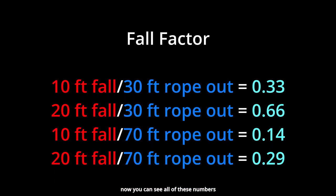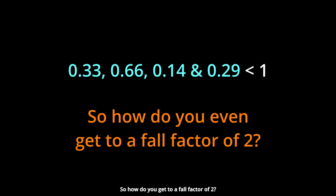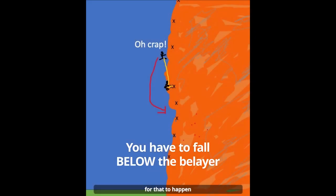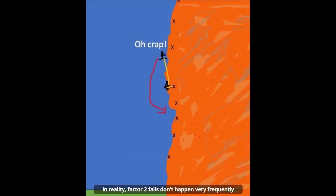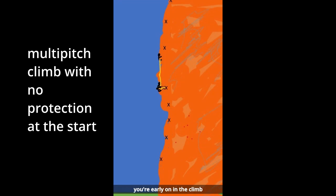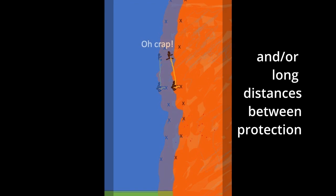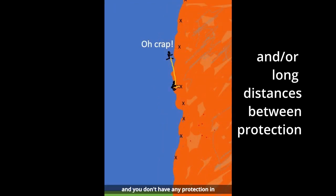So how do you get to a fall factor of two? You actually have to fall below the belayer for that to happen. This is why factor two falls don't happen very frequently in reality. The scenario where you could see it happening would be in multi-pitch climbing, early on in the climb, with no protection in, and you fall below your belayer.